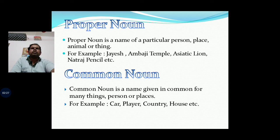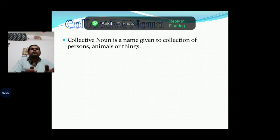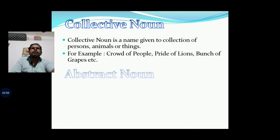Now we shall move further towards the Collective Noun. Collective Noun is a name given to a collection of persons, animals or things. So any group or collection of persons, animals or different things is given a special name — that is what we call Collective Noun. For example: crowd of people, pride of lions, bunch of grapes.